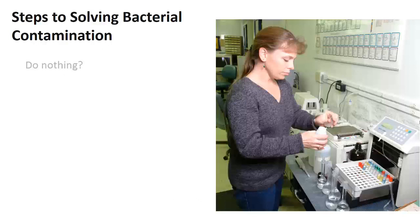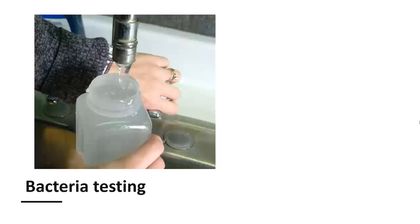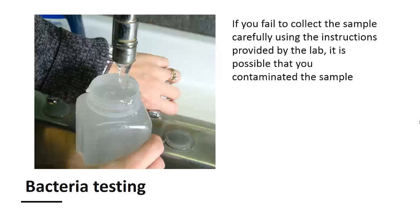A second consideration for resolving bacteria problems is to consider retesting the water. Bacteria tests are readily available and inexpensive, but should always be arranged with a state-accredited water testing lab, like the Penn State Agricultural Analytical Services lab. Retesting can make sense because it's easy to inadvertently contaminate a water sample during sample collection. Coliform bacteria and even E. coli bacteria can be present on your hands, countertops, and faucets. If you fail to collect the sample carefully using the instructions provided by the lab, it's possible that you contaminated the sample, resulting in the presence of bacteria not actually in your well or spring. If you have any doubt about your sample collection procedure, you may want to spend the small amount of money to resample and confirm the original result before proceeding with more expensive and time-consuming solutions.